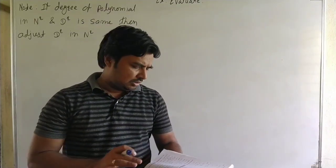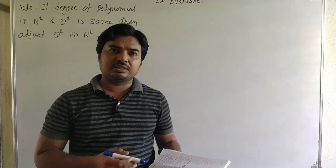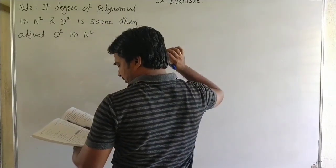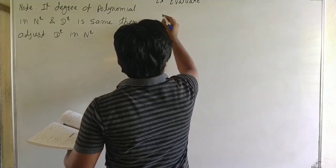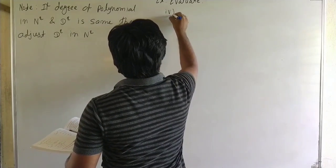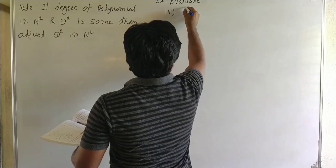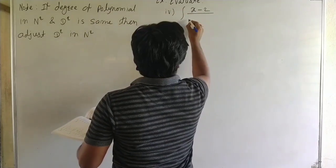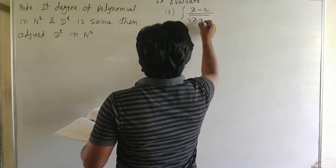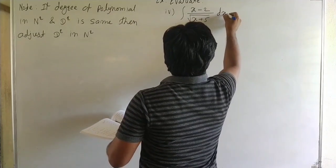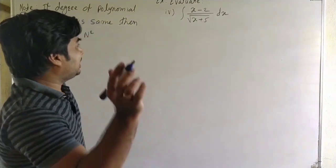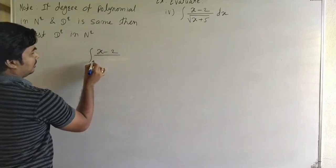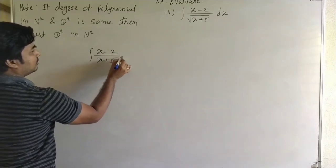We continue the exam — third example in Exercise 3.1, question number 4. Evaluate the integral of (x minus 2) upon under root of (x plus 5) dx. In the last lecture we saw examples in the form of (x minus 2) upon (x plus 5) dx.